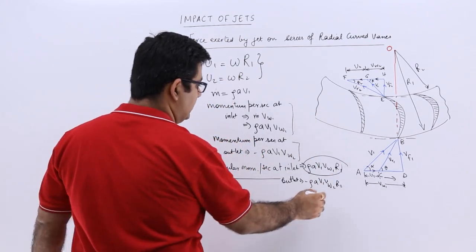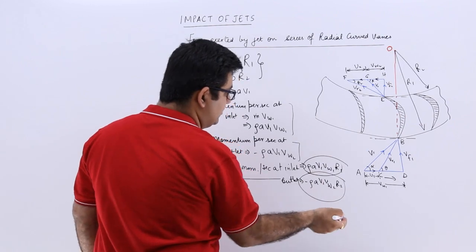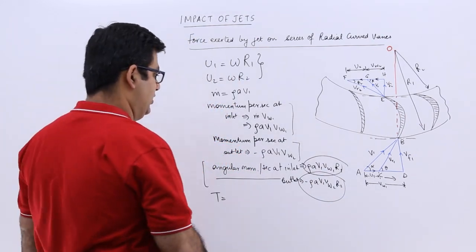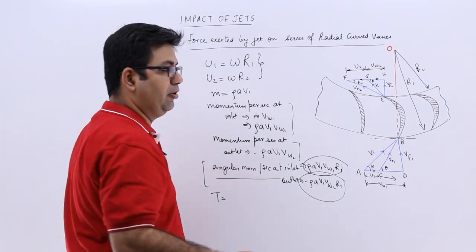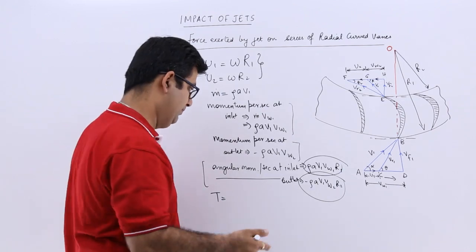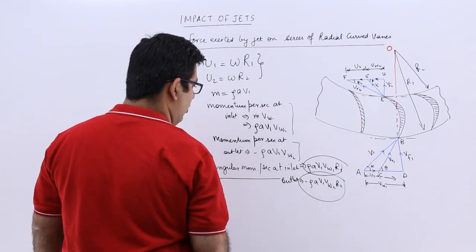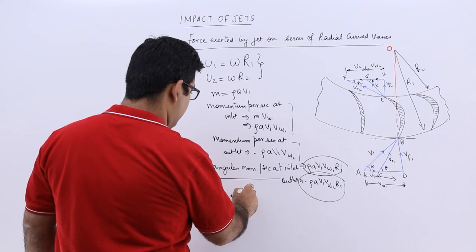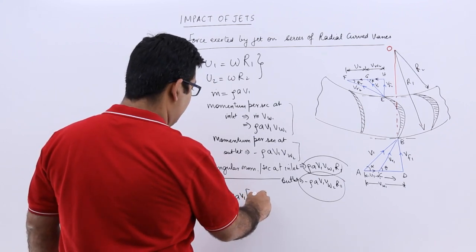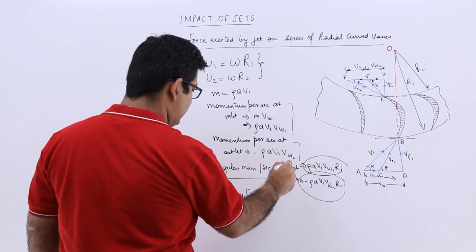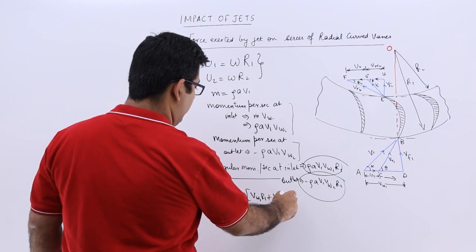This is at inlet and this is at outlet. Inlet minus outlet gives you the momentum change because it is per second. Then you will have ρAv1 is common into vw1r1 plus vw2r2.